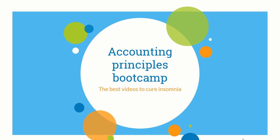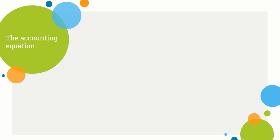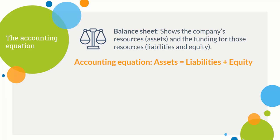Let's talk about some accounting principles and some of the key things you need to learn. The very first is the accounting equation. The accounting equation basically states that assets need to equal liabilities plus equity. When you look at the balance sheet, the assets must always equal liabilities plus equity — there are no exceptions. That is why it's called a balance sheet.